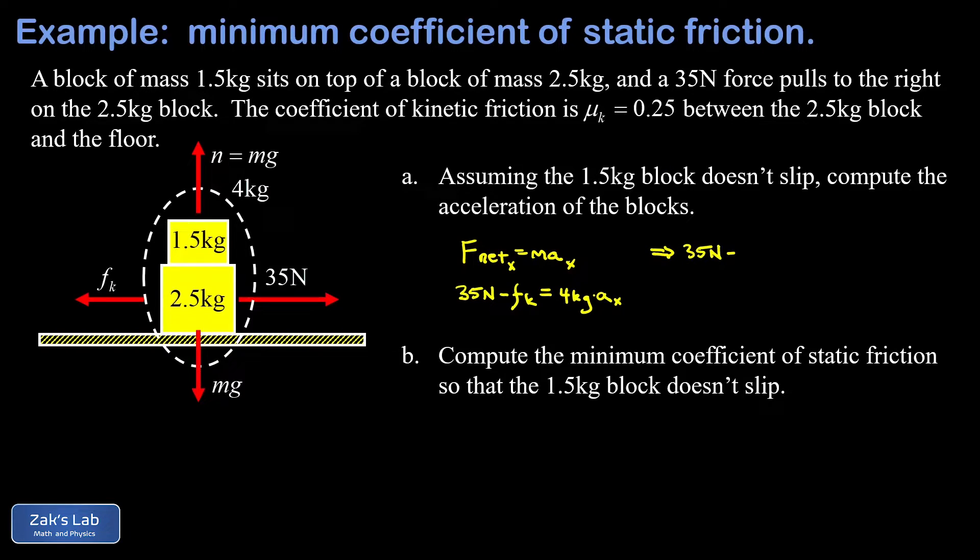The kinetic friction force is given by mu k the coefficient of kinetic friction which is 0.25 multiplying the normal force which was mg here. So we plug in the mass 4 kilograms and we'll use an approximation of 9.8 meters per second squared for g, and that's all equal to 4 kilograms times our x acceleration.